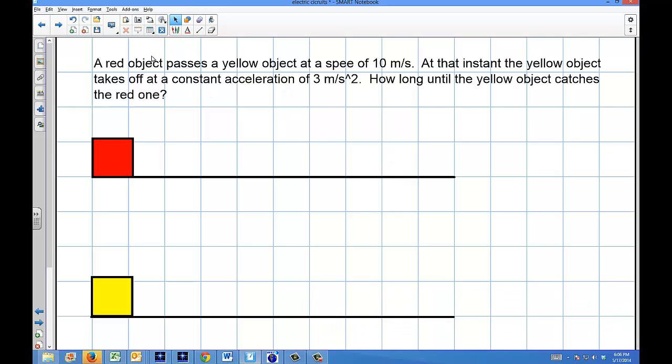Okay, so in this example, this is a classic interception question. We have a red object that passes a yellow object with a speed of 10 meters per second. At that instant, the yellow object takes off at a constant acceleration of 3 meters per second squared. How long until the yellow object catches the red one?